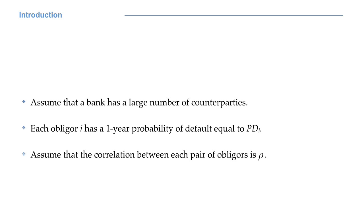Assume that a bank has a large number of counterparties. Every obligor i has a one year probability of default equal to PDi. We have estimated this probability using some models like Merton, Moody's KMV, or some manipulations of credit ratings. Assume that the correlation between each pair of obligors is ρ.